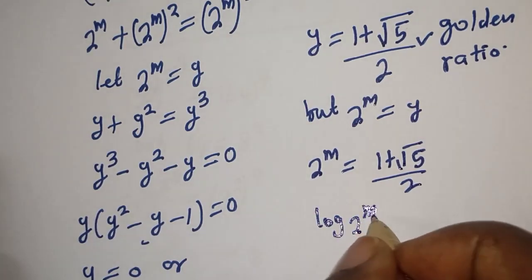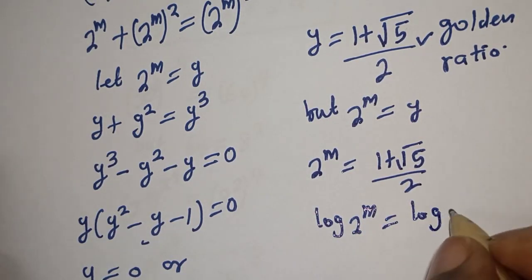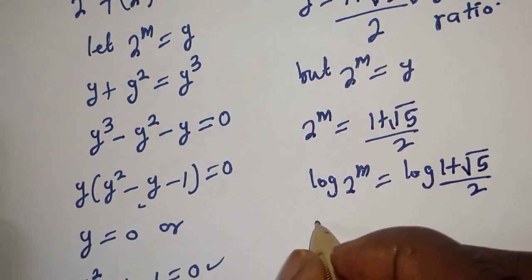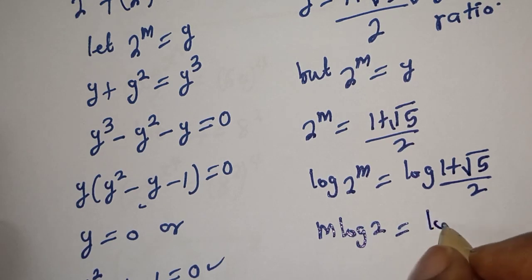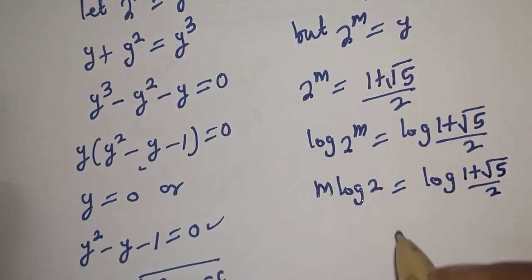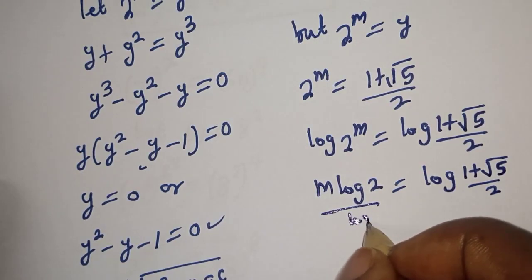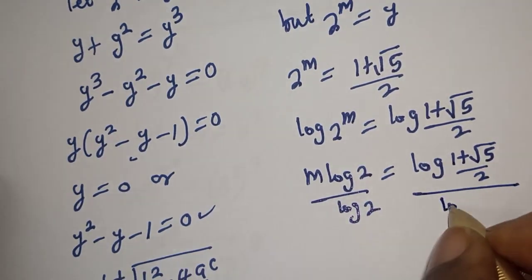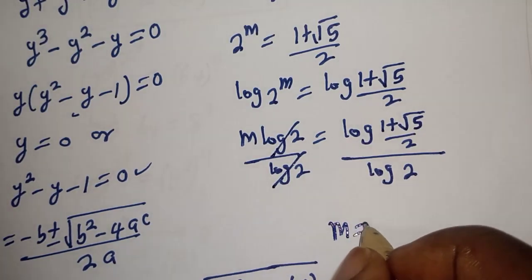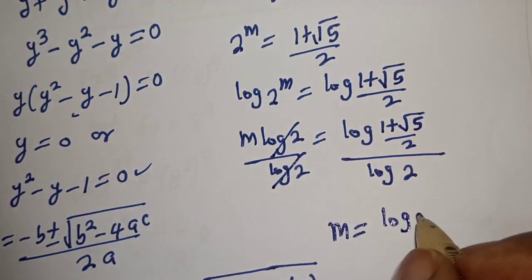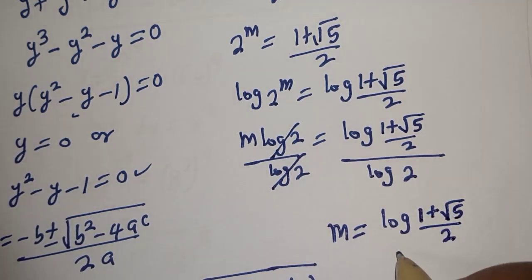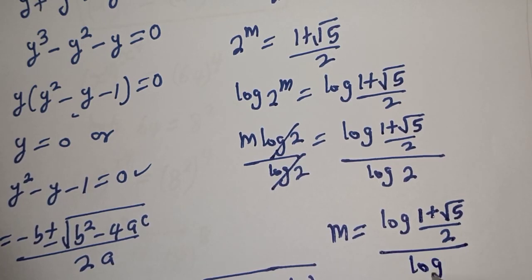Since y equals 2 raised to power m, we take log of both sides: log of 2 raised to power m equals log of 1 plus square root of 5 over 2. Then m times log 2 equals log of 1 plus square root of 5 over 2. Dividing both sides by log 2, m equals log of quantity 1 plus root 5 over 2, divided by log 2.